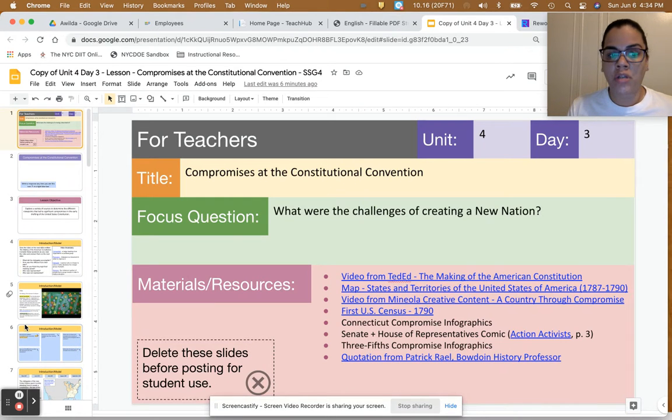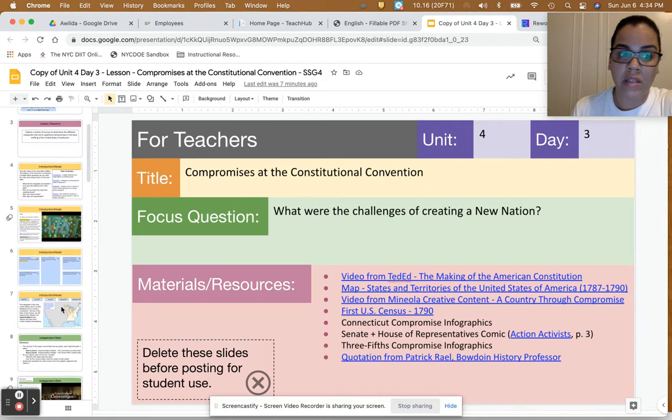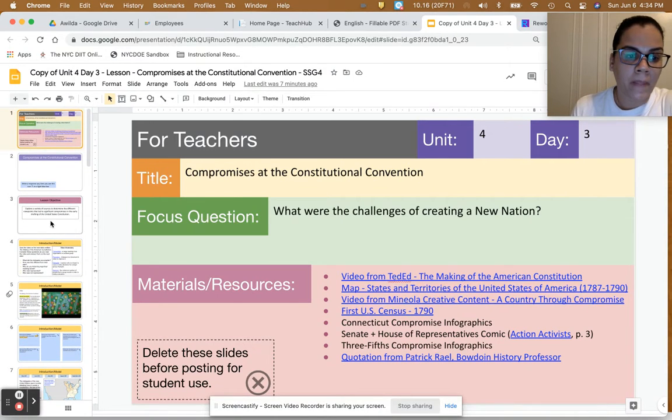You also have the option of having all the students in groups, but analyze both sources and discuss what the three-fifths compromise was and what it implied for the United States, as well as what happened during the Constitutional Convention.